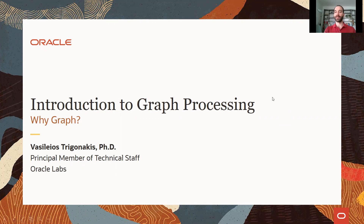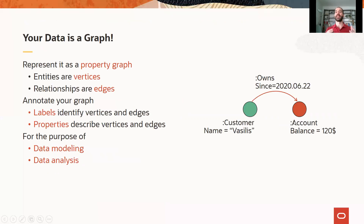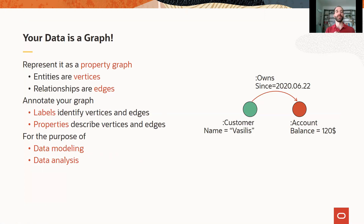Let's start by taking a look at and explaining what a graph is using the example on the right-hand side of this slide. A graph, also known as a property graph, contains vertices that are the entities of the graph. So in this example, we have the green and the red vertices. It also contains relationships that connect these vertices together, which are called edges in graph terminology.